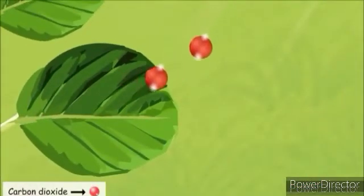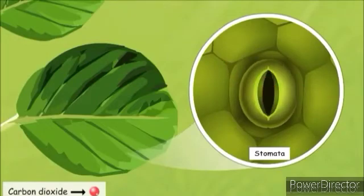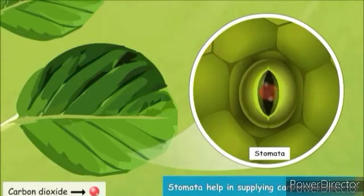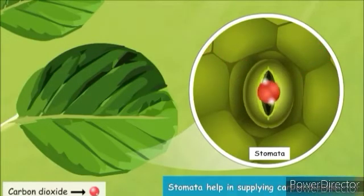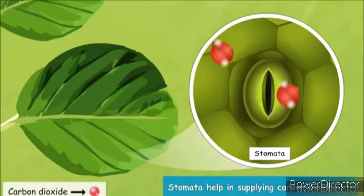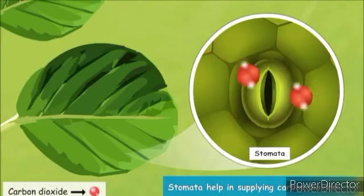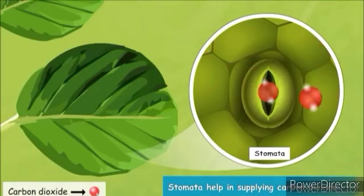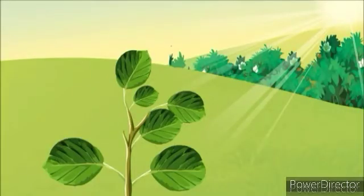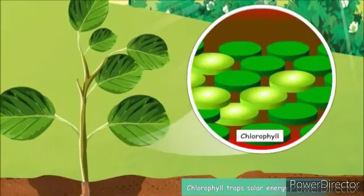To take carbon dioxide from the air, there are stomata. Stomata are the minute openings present on the lower surface of the leaves. Through stomata, carbon dioxide moves inside the leaves. The third ingredient, sunlight, is trapped by chlorophyll.